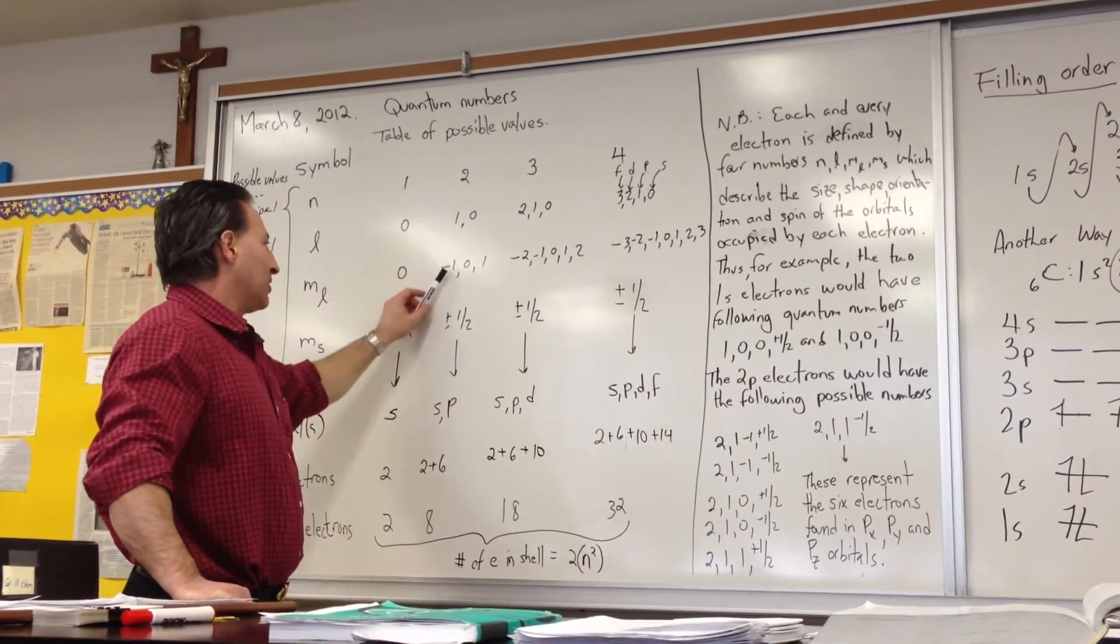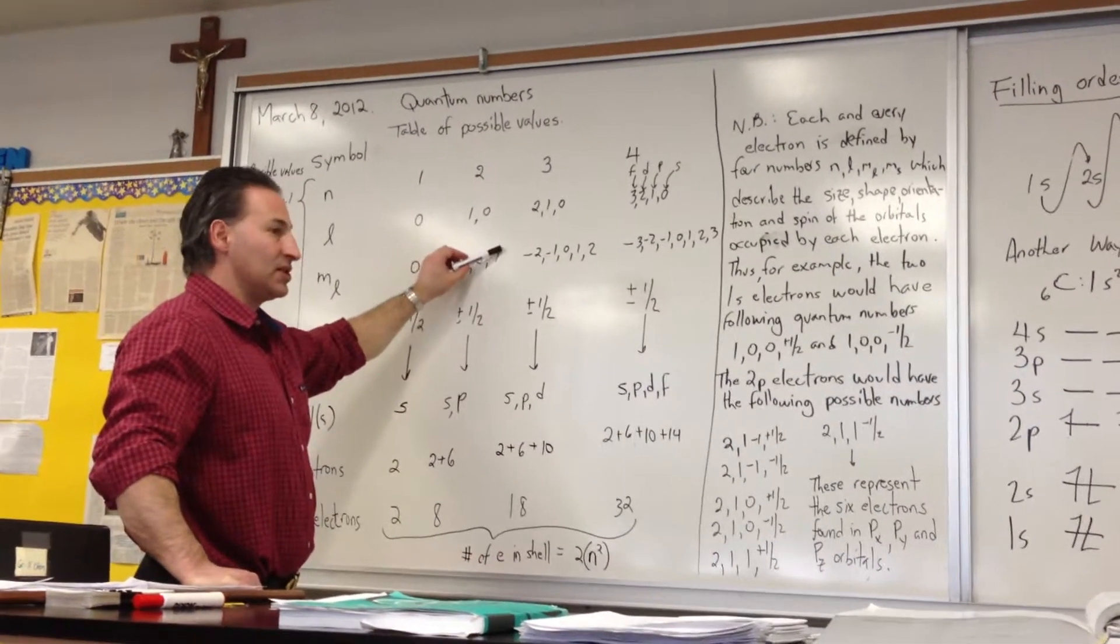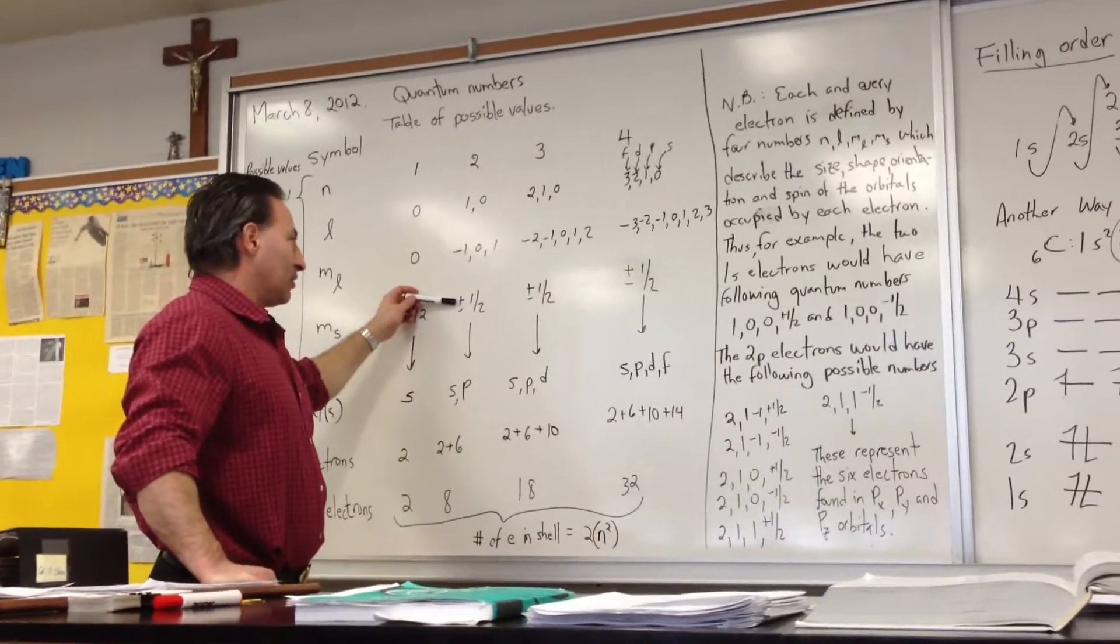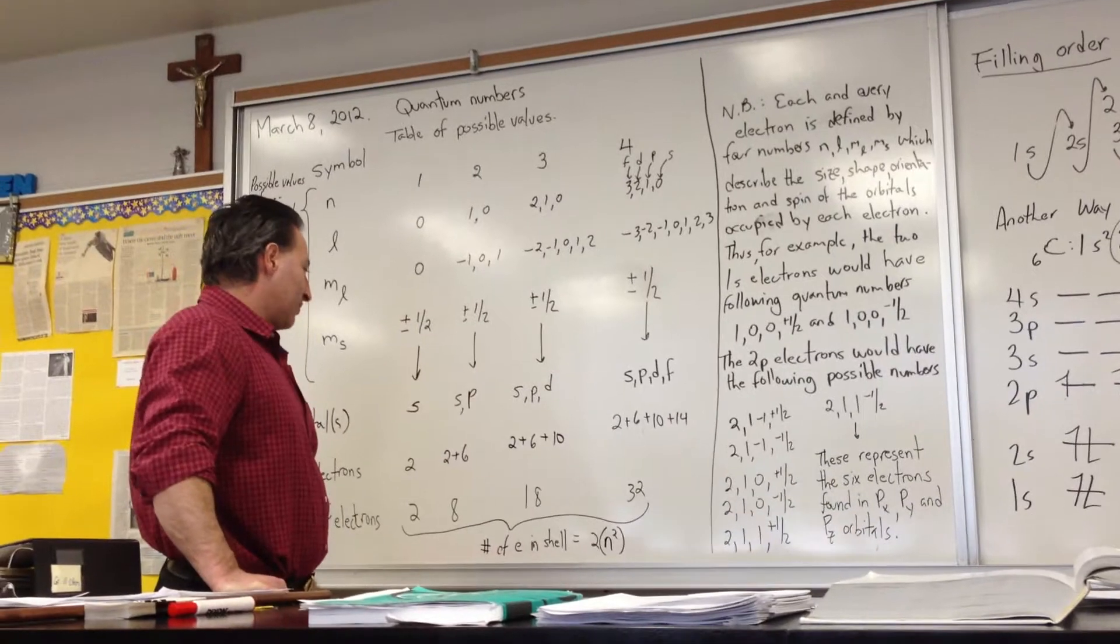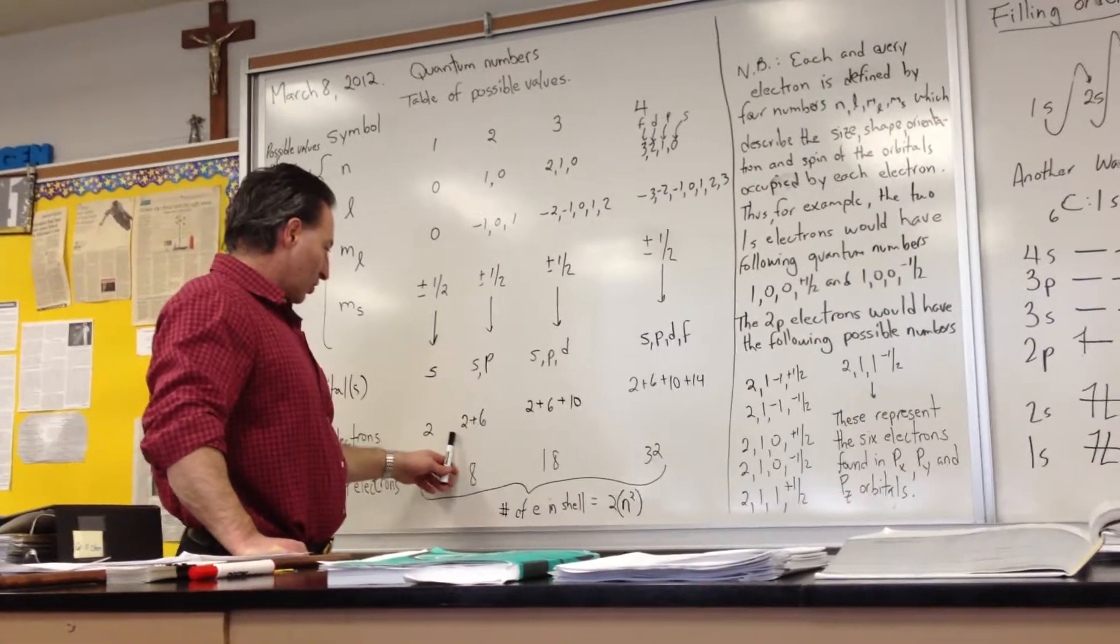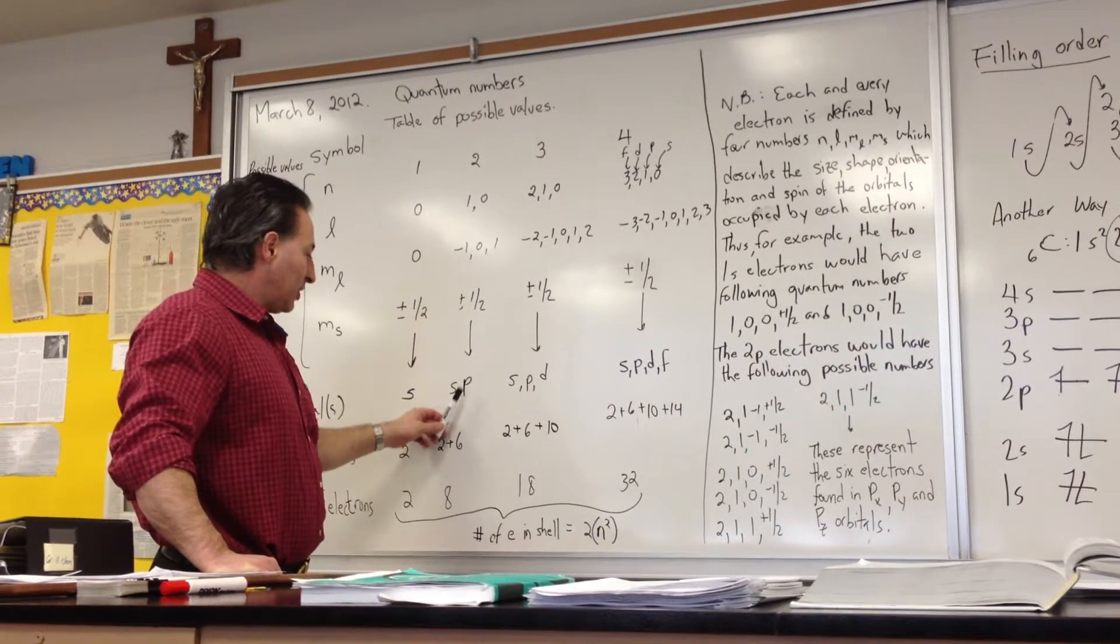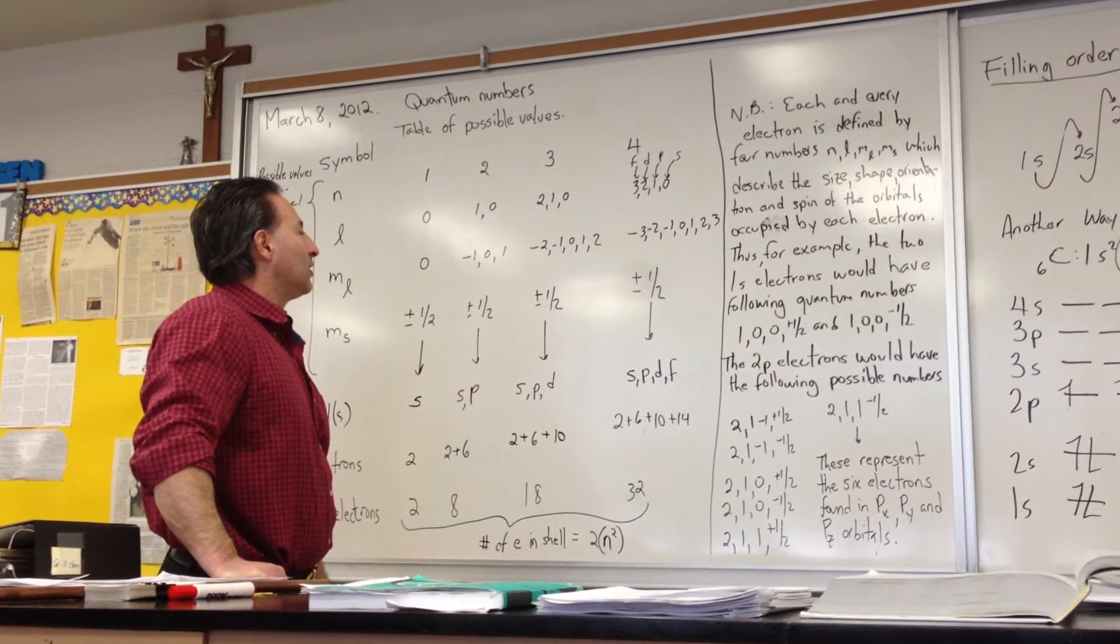When you have p orbitals, the value of the magnetic can be negative one, zero, or one, corresponding to the px, py, and pz orbitals. And again, each orbital can contain up to two electrons that are spin paired, positive or minus one-half. So if the principal quantum number is two, you can have an s or a p orbital for a total of eight electrons being held by that quantum level.